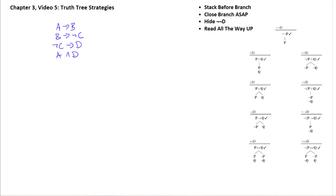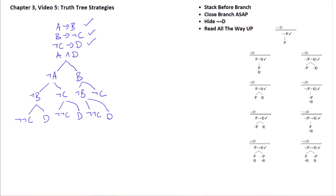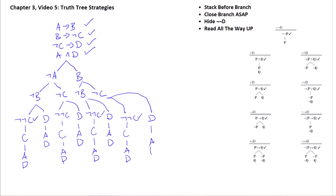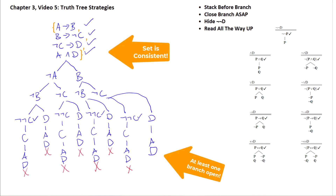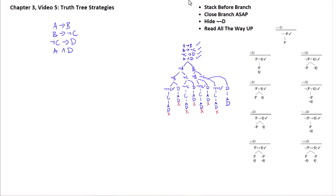Here's one last example. Done the least efficient way first — just dealing with the three conditionals in order, each branches. We end up with D, A, D / not-C, and B as the open branch, so that set of formulas is consistent. But it's a massive, complex tree.